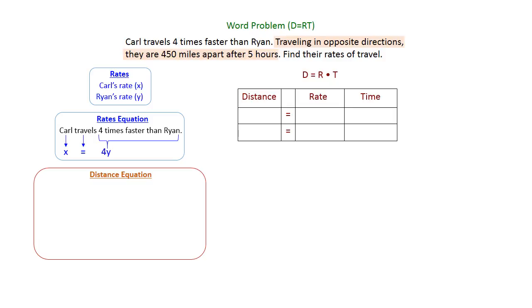I'm going to make a distance equals rate times time table, and we're going to fill in what we know. We have Carl and Ryan, and we know that Carl's rate is X and Ryan's rate is Y. So we can put the X and the Y into the table for Carl and Ryan.